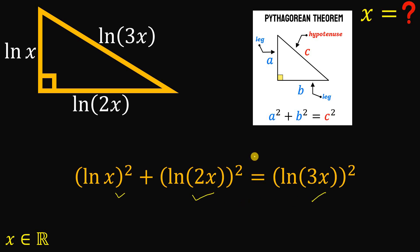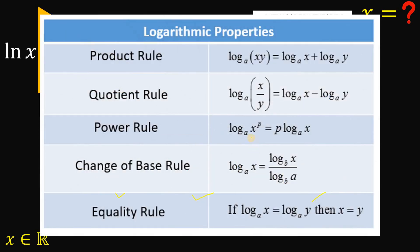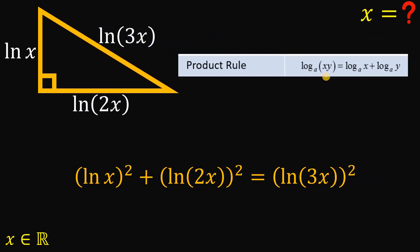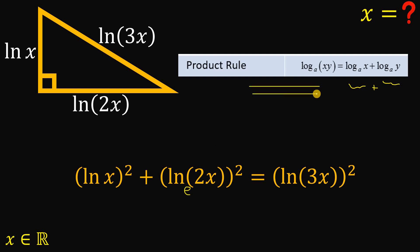At this point, we will use some properties of logarithm — specifically, we will use the product rule. It states that log base a of (x times y) equals log base a of x plus log base a of y. In this case we have ln with base e, but we use the same property.